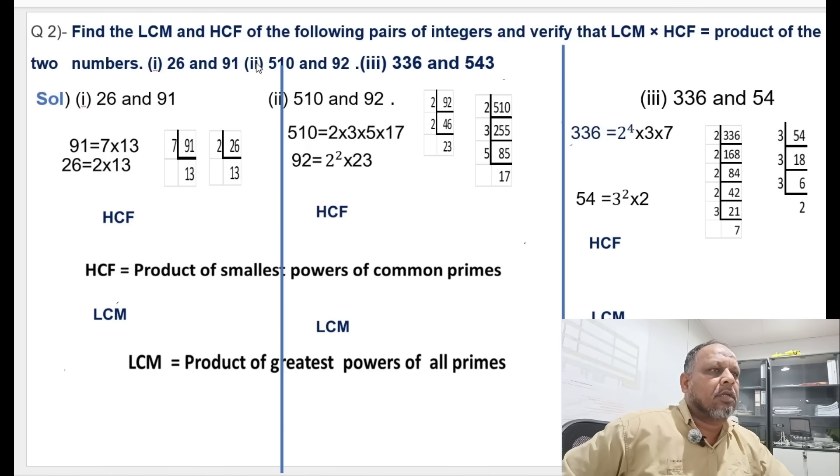Starting with 26 and 91. 26 is 2 into 13, 91 is 7 into 13. The prime factors show the common factor is 13 with power 1 only, so we have got HCF equals to 13.